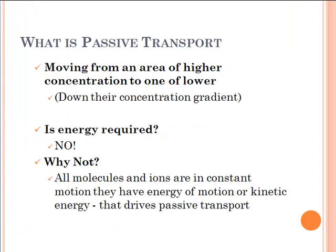We'll begin with defining it. Passive transport is a movement of a substance from an area of higher concentration to an area of lower concentration — that's often termed 'down its concentration gradient.' To move from high to low concentration, the cell has to expend absolutely no energy in the form of ATP. This is something that happens naturally.